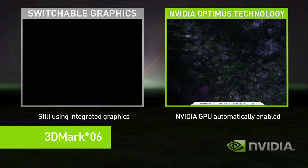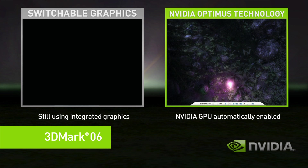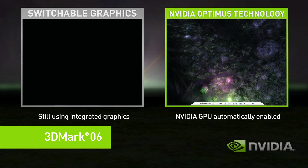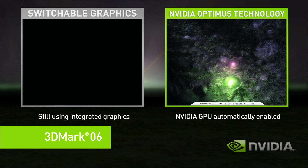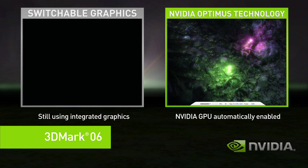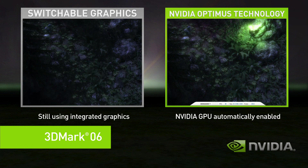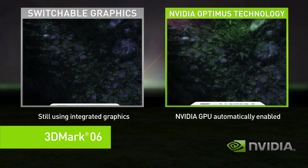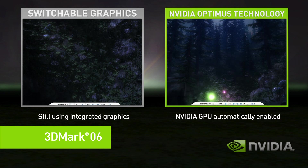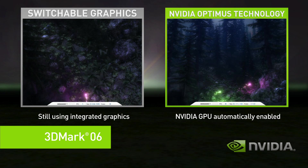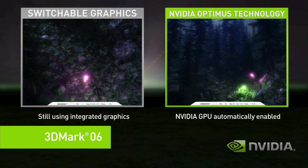Optimus, on the right-hand side, when it starts a complex application, it automatically uses the discrete GPU. The performance difference between the two is easy to see.